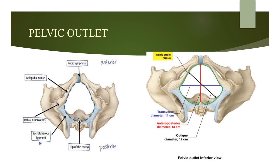The pelvic outlet has a lozenge shape. In inferior view, it is bounded by the lower surface of the pubic symphysis, the inferior rami of the pubic bone, the ischial tuberosities, the sacrotuberous ligament as the posterolateral boundary, and the tip of the coccyx bone.